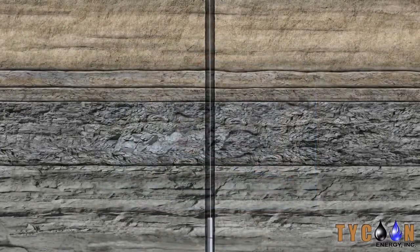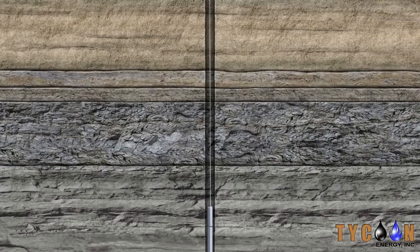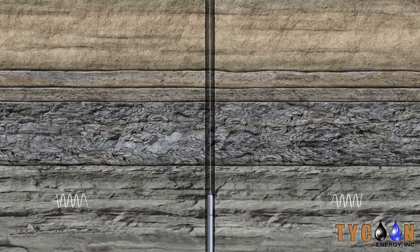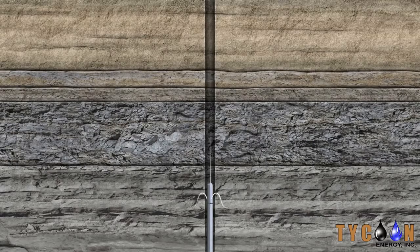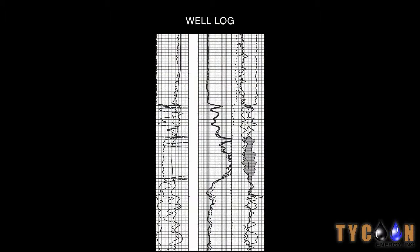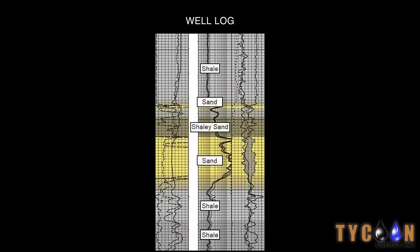As the probe is raised back up the hole, the various logging tools are activated by computers on the surface that produce a graph called a well log, which represents the geologic properties of the layers below the surface.